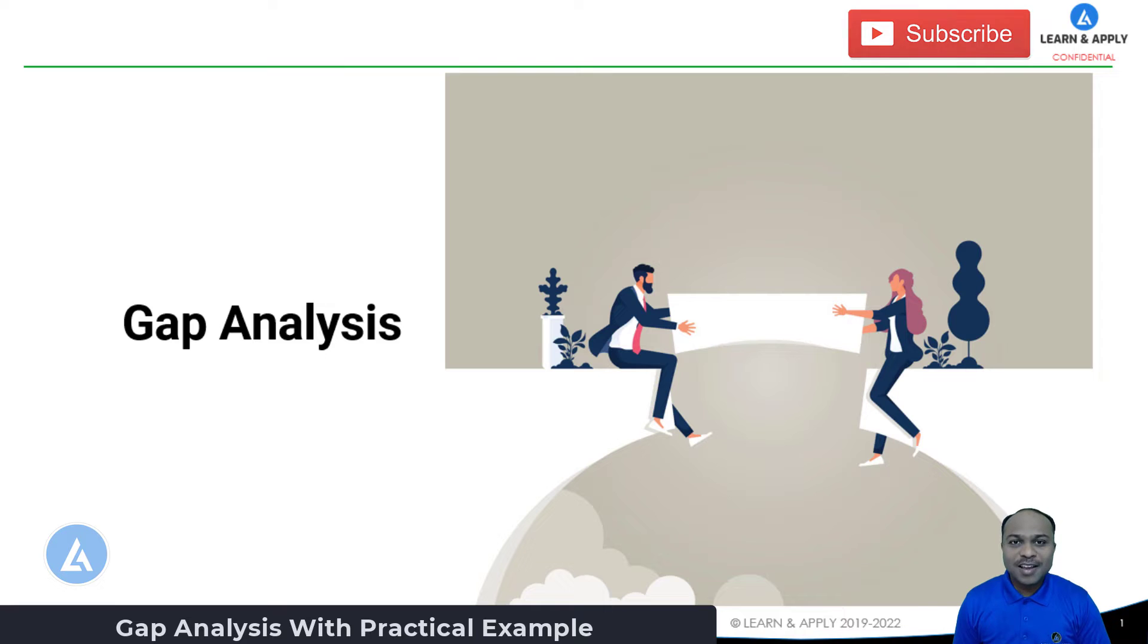Hello friends, welcome back. In this video, we are going to understand one of the important concepts from Lean Six Sigma that is dealing with how to identify the weakness or weak points in the organization or weak points in your product or processes because of which it is not achieving its targeted performance. The tool is gap analysis. We are going to understand this gap analysis with the help of practical examples so that you can understand it in a better way. So let's begin to learn this important concept.